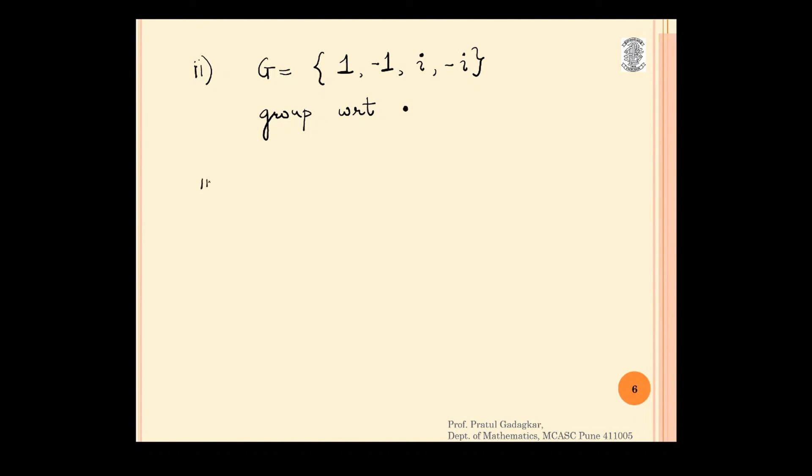The third example of a group with 4 elements is the Klein 4 group. This group is also denoted by V4.